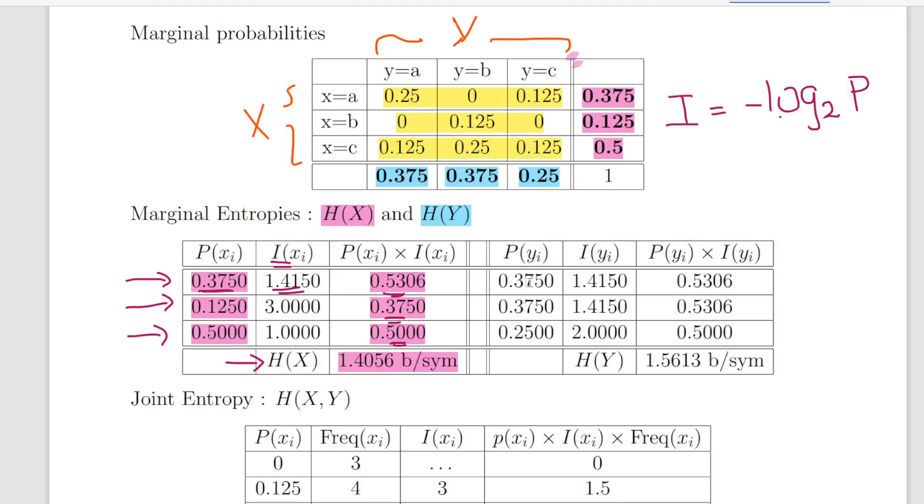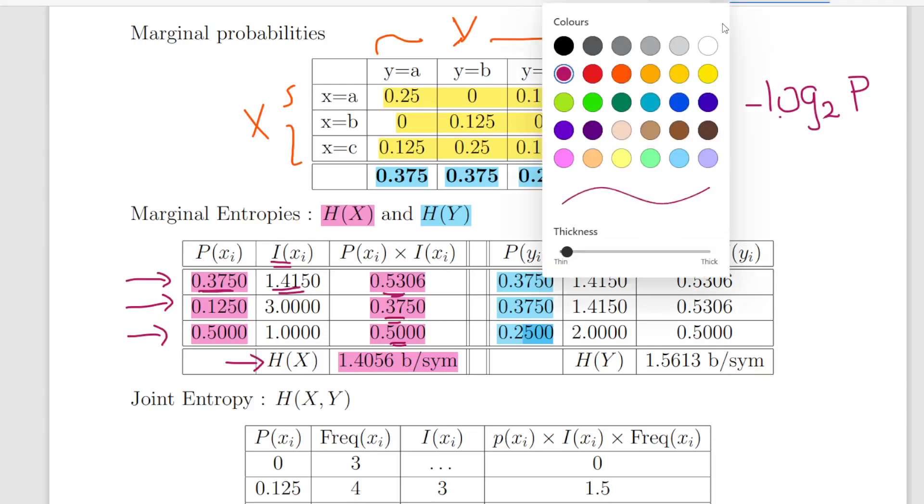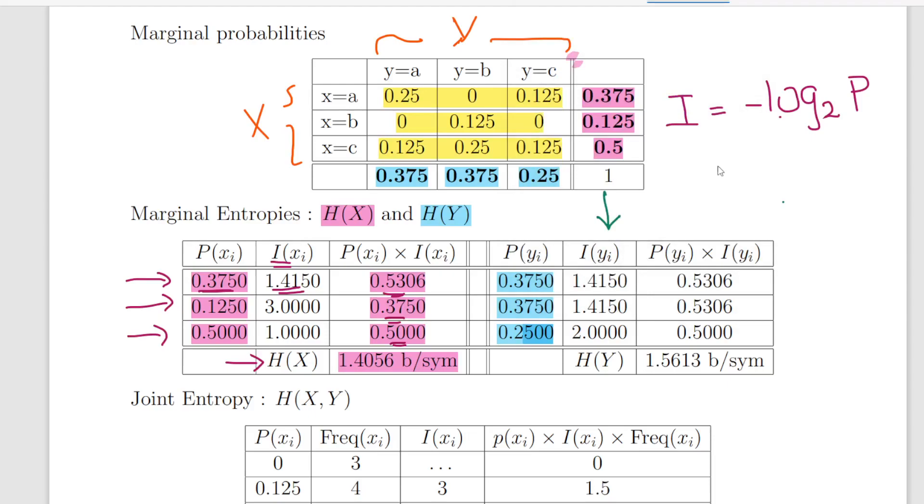I'm going to do the entropy of Y here. So again, I have my totals here from above: 0.375, 0.375 and 0.2500. Again, what I'm going to do now is calculate the information associated with each of these probabilities. So that again is minus log to the base 2 of P. So minus log to the base 2 of 0.3750 gives me 1.4150. So I have that in twice there and minus log to the base 2 of 0.2500.